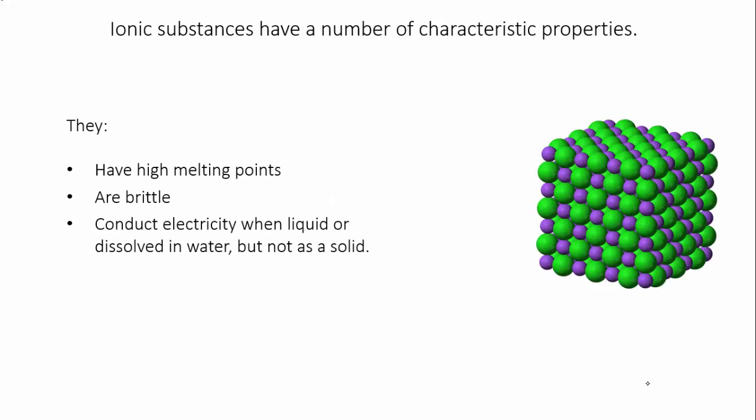Ionic substances have a number of characteristic properties that's due to their bonding. They have high melting points, they tend to be brittle, and they conduct electricity when they're a liquid or when they're dissolved in water, but not when they're solids.